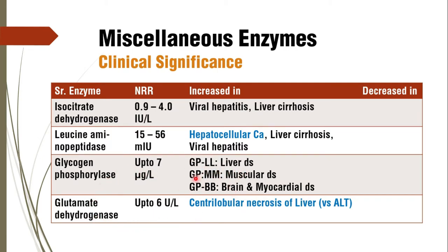Glutamate dehydrogenase is found to be increased in centrilobular necrosis of liver. There are different types of necrosis of liver, but in case of centrilobular necrosis, increase in glutamate dehydrogenase gives you confirmation of this kind of necrosis. Whereas in case of panacinar or panlobular necrosis of liver, serum alanine transaminase is increased. So glutamate dehydrogenase is specific for centrilobular necrosis, and ALT is for panacinar or panlobular necrosis.